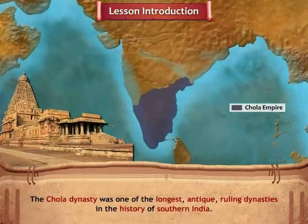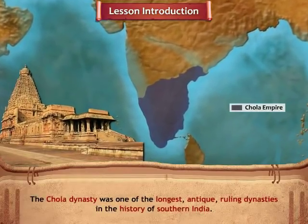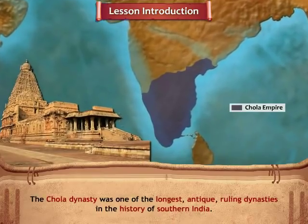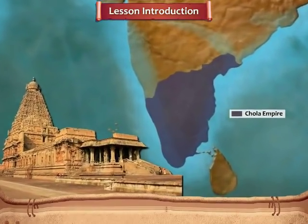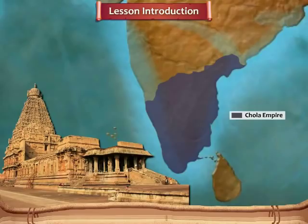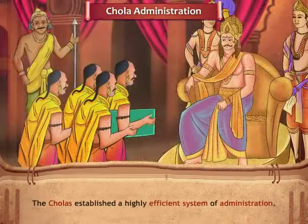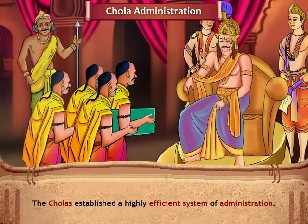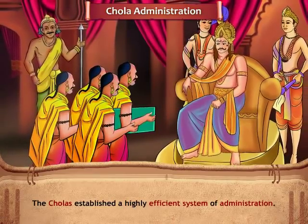The Chola dynasty was one of the longest ruling dynasties in the history of southern India. In this module, you will learn about administration and social and economic conditions that prevailed during the Chola dynasty. The Chola rulers established a highly efficient system of administration.